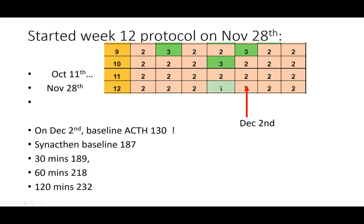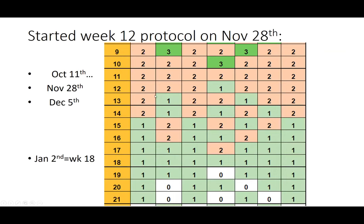On 1st December she had one milligram, and on 2nd December she had a synacthen test. On that occasion, her baseline ACTH was 130 and the synacthen went 187, 189, 218 nanomoles per litre — some encouragement. She hadn't quite reached my target of 200, but I was positive to keep going. By January 2nd she was on one milligram every day, and as of today — week 19 — she's still on one milligram, but this Thursday she's going to try zero.